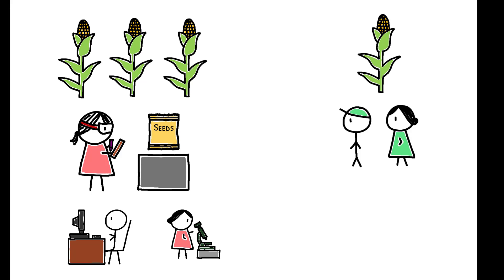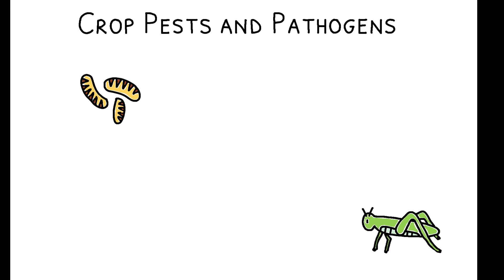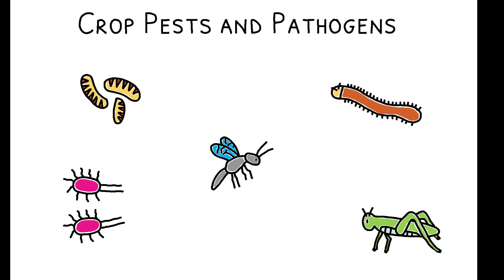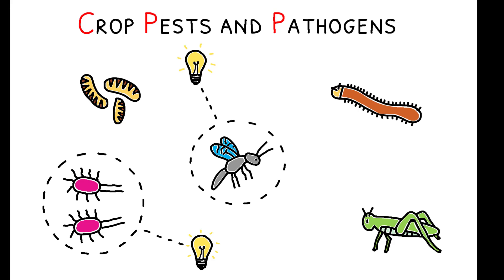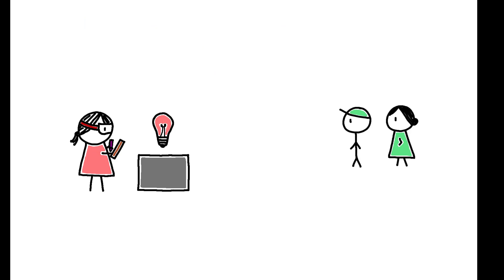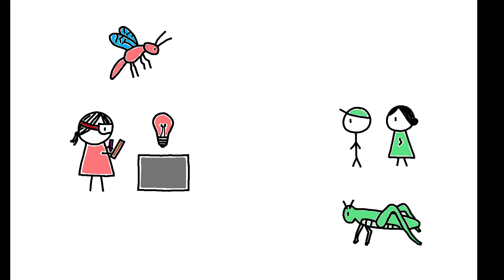To quantify how this shapes the technology frontier, the authors use data on the global distribution of crop pests and pathogens. CPPs are a key target of biotech innovation, and individual technologies are often aimed at developing crop resistance to particular pests. This specificity is notable, as CPP environments differ around the world.